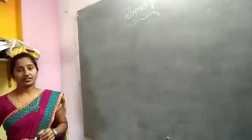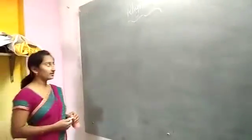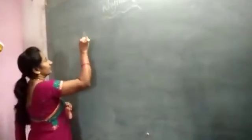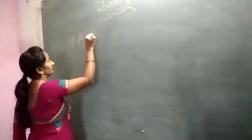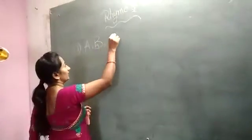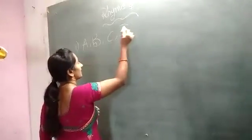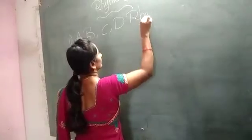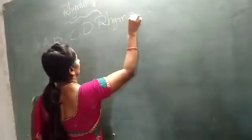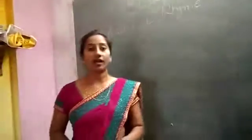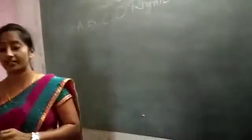The first rhyme is — A, B, C, D rhyme. Is that the alphabet rhyme? Yes, the first rhyme is the A, B, C, D rhyme, in alphabetical style.